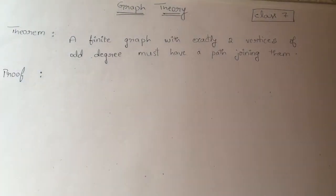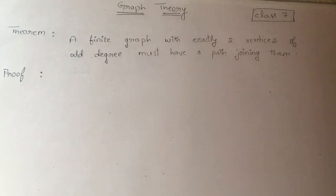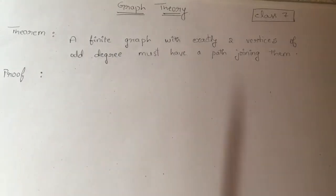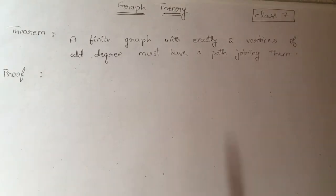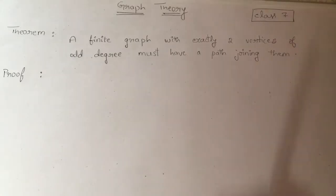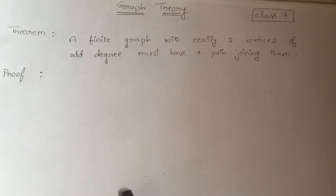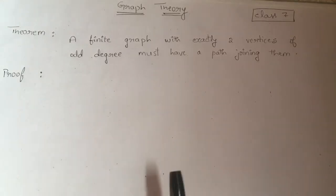In this class we will learn one more property of a finite graph. A finite graph can be connected or can be disconnected. The theorem states: in a finite graph with exactly two vertices of odd degree, there must be a path joining them. Stated as a theorem: a finite graph with exactly two vertices of odd degree must have a path joining them.